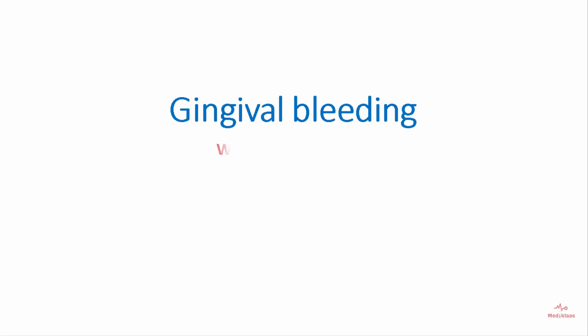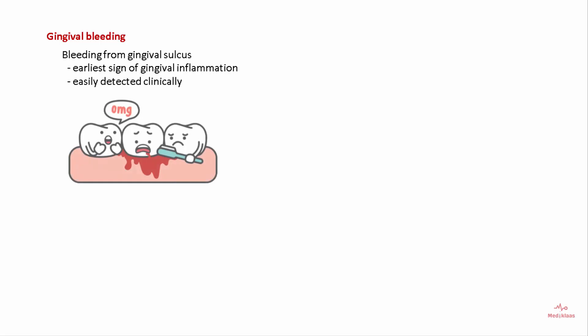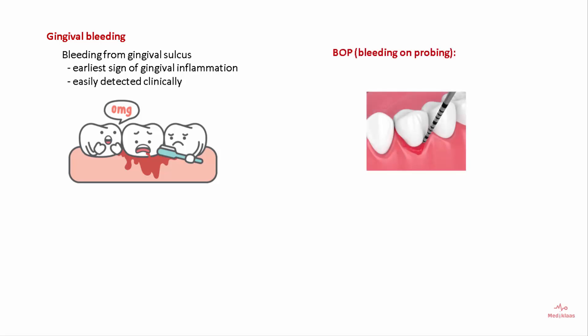Gingival bleeding: what are the causes? Bleeding from gingival tissues can be the earliest sign of gingival inflammation and it can be easily detected clinically. Bleeding on probing can be a valuable tool in early diagnosis of gingivitis.